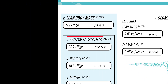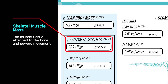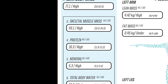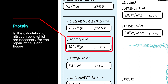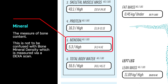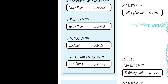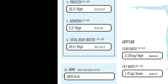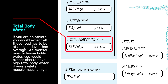Your lean body mass is inclusive of skeletal muscle mass at number 3, which is the muscle tissue attached to the bone and powers movement. Protein at number 4 is a calculation of nitrogen cells which are necessary for the repair of cells and tissue. Mineral at number 5 is the measure of bone content. This is not to be confused with bone mineral density, which is measured via a DEXA scan. And total body water at number 6.